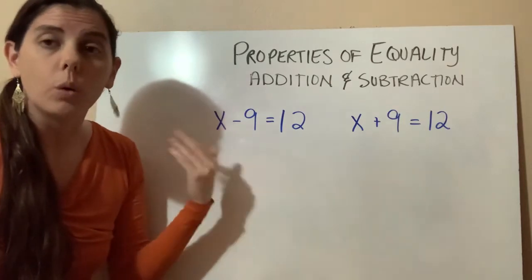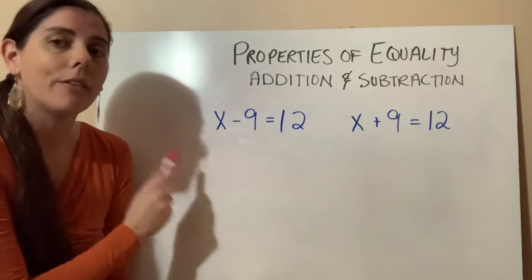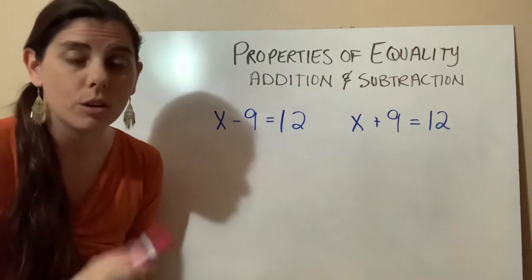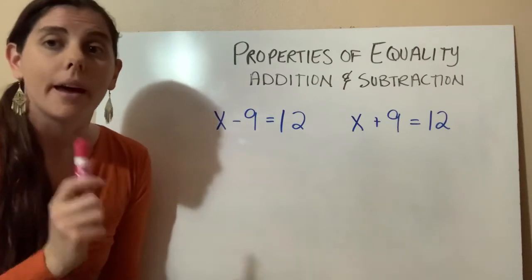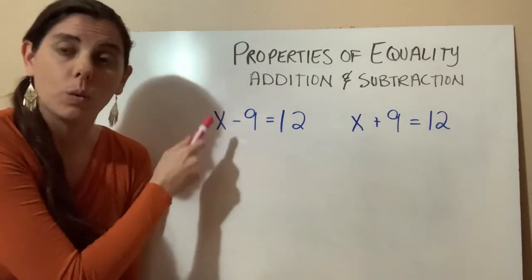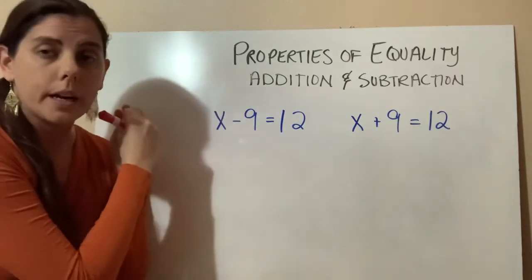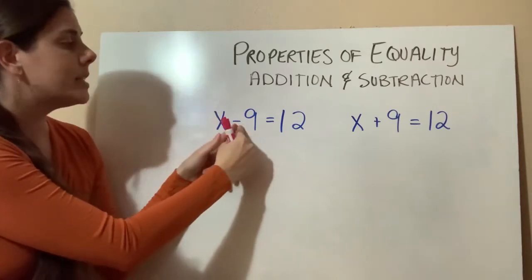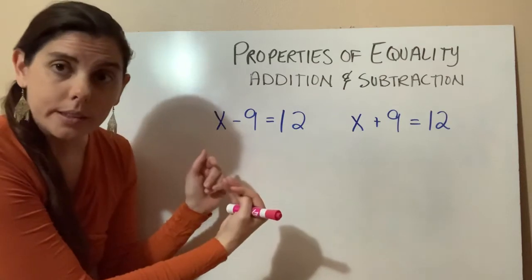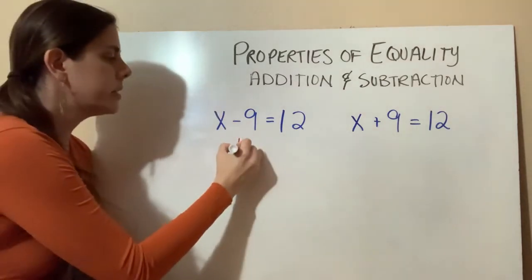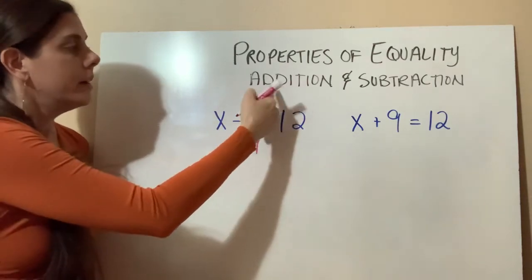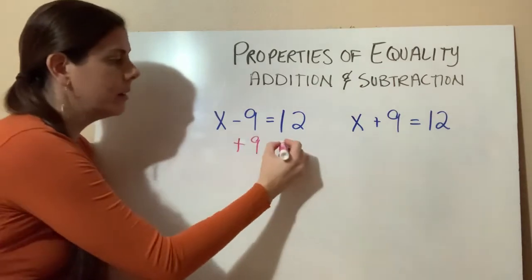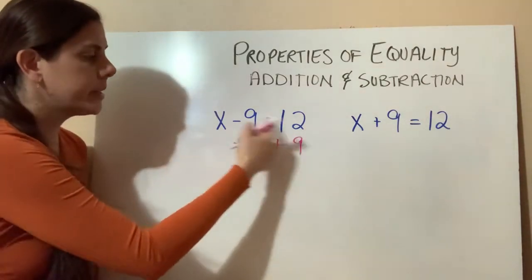In this example, what are we going to be adding? Well, if we want to know what x equals, we have to get x by itself on one side of the equal sign. Whenever we're solving for a variable, that is our goal — get x, y, or whatever letter all by itself on one side of the equal sign. Right now this x is with a negative 9, and we don't want that. Since this is a negative 9, the opposite is positive 9. So we're using our addition property of equality — we're going to add 9 here, and add it to the other side too.